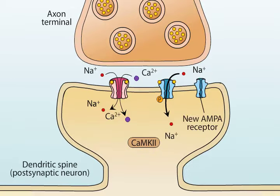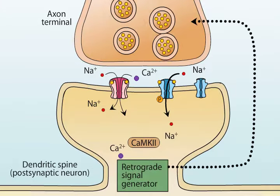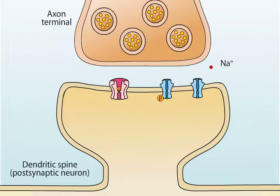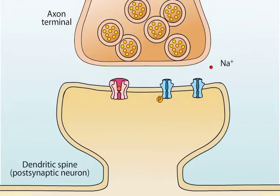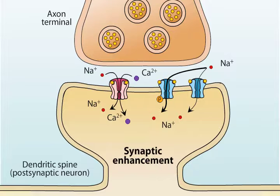CaM kinase also promotes movement of AMPA receptors from intracellular stores into the membrane, making more receptors available to stimulate the spine. In addition to these postsynaptic effects, calcium may also facilitate the release of transmitter from the axon terminal via retrograde signals such as nitric oxide. As a result of the increase in the number of AMPA receptors, the response to a stimulus of a given strength will be stronger than it was before the NMDA receptors were activated. In this regard, the synapse is said to be enhanced, and this physiological change is thought to be one of the mechanisms underlying the expression of long-term potentiation, or LTP.